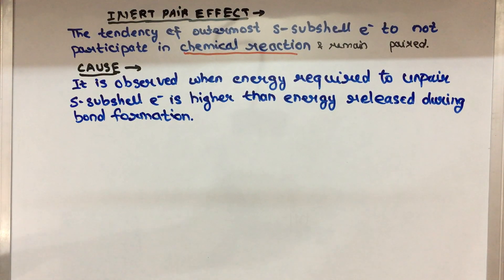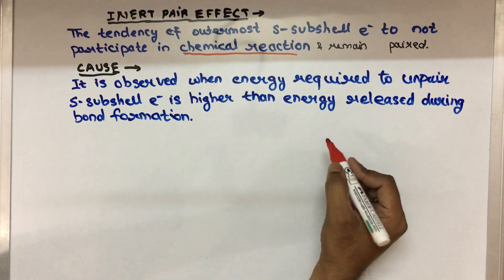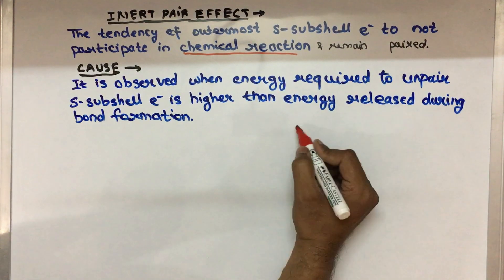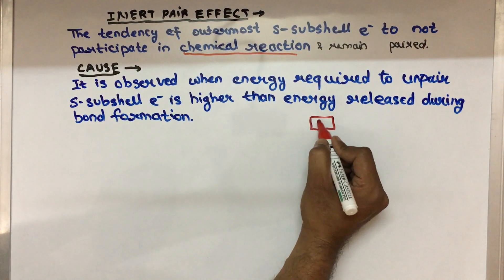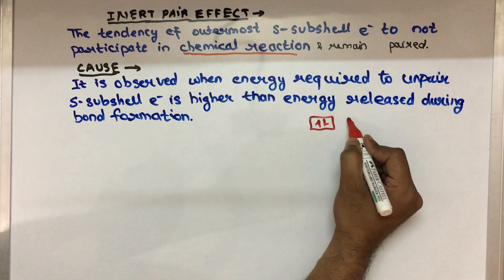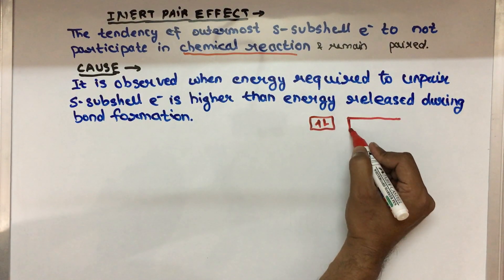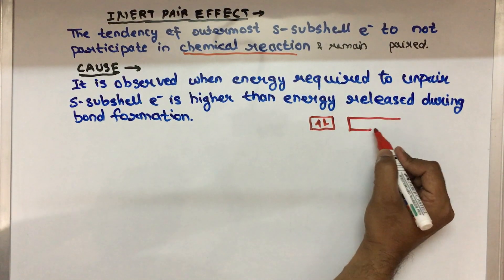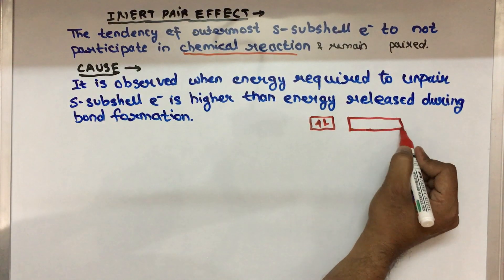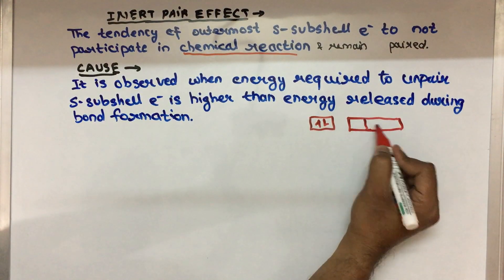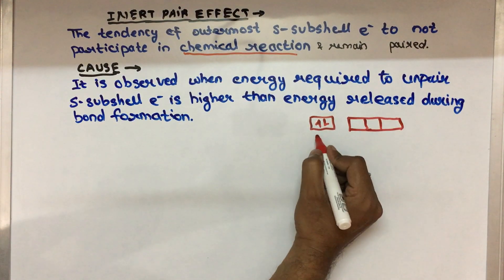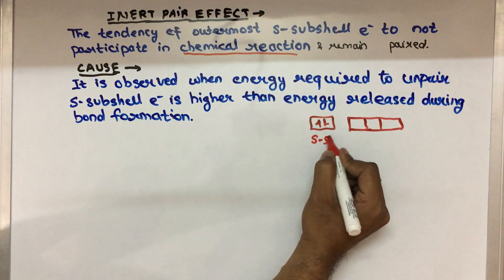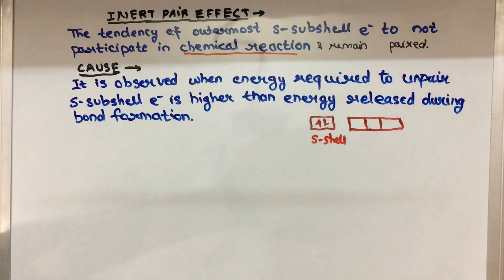Now, what is the reason? The reason is that generally the configuration of a p-block element is 2 electrons in the s sub-shell, and p-electrons vary from 1 to 5. The s sub-shell electrons are attracted and remain paired.